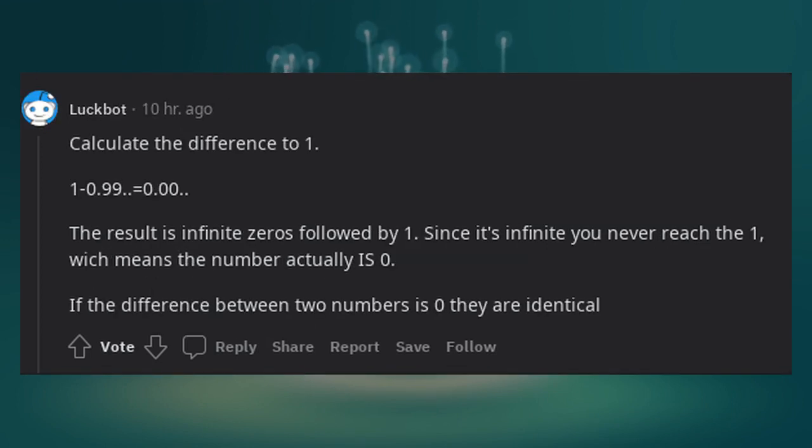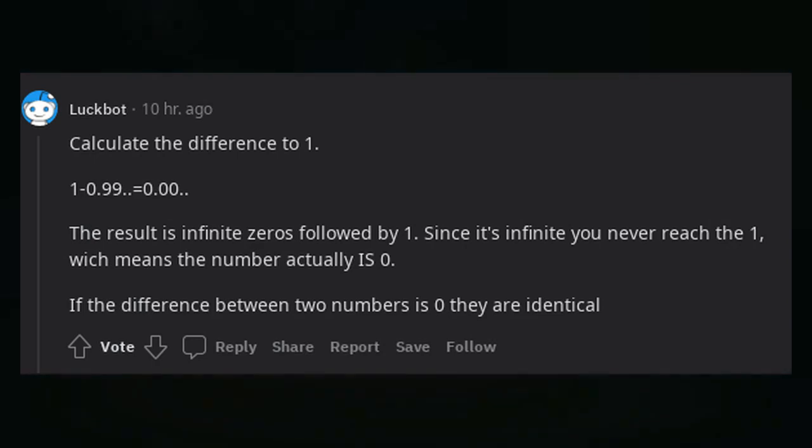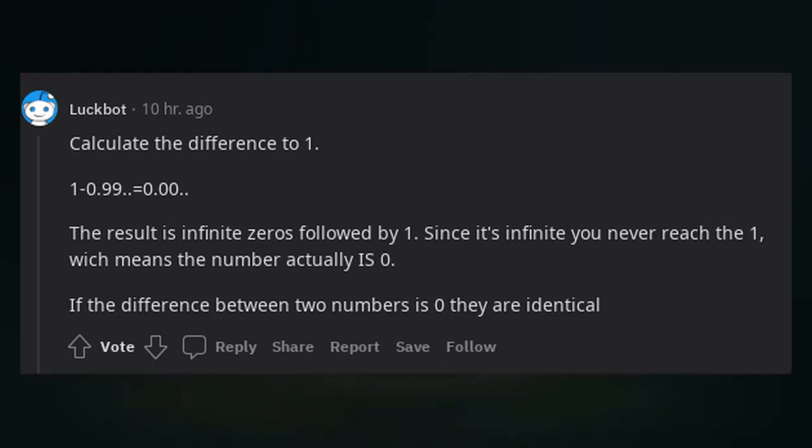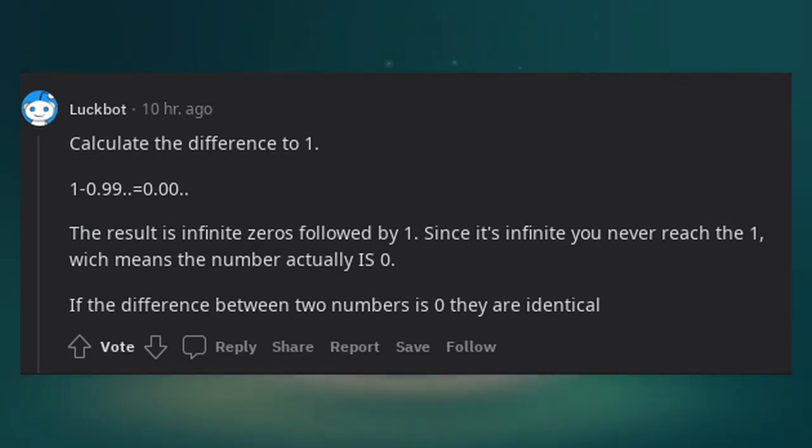Calculate the difference to 1. 1 minus 0.99 repeating equals 0.00 repeating. The result is infinite zeros followed by 1. Since it's infinite you never reach the 1, which means the number actually is 0. If the difference between two numbers is 0, they are identical.